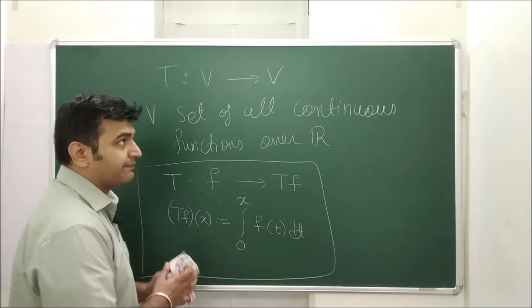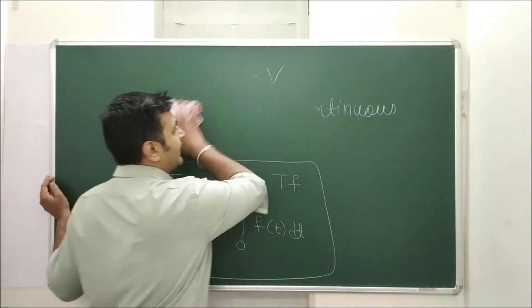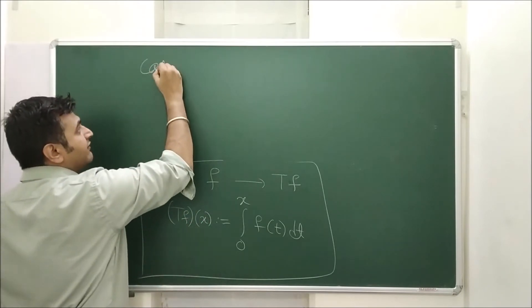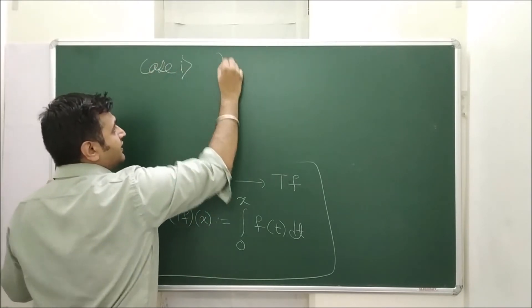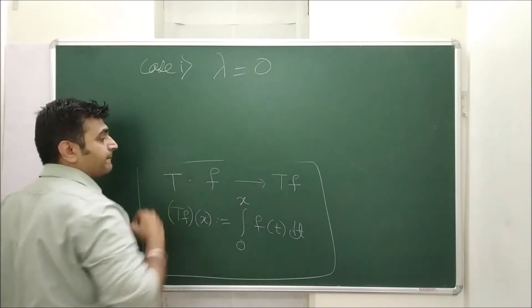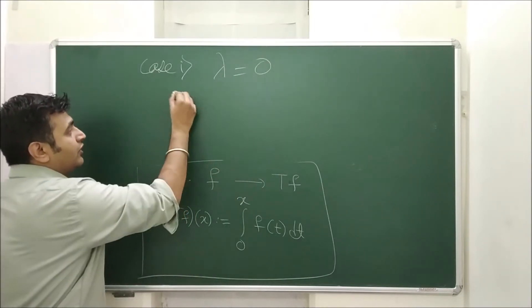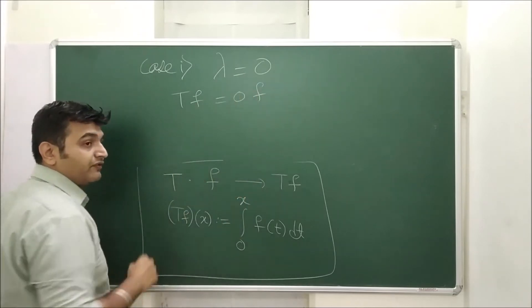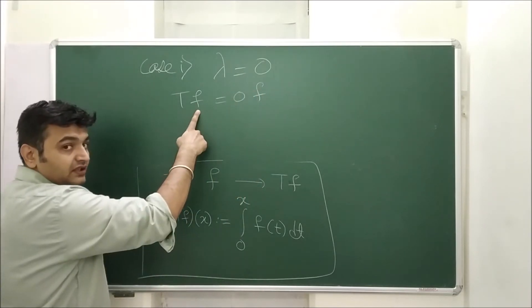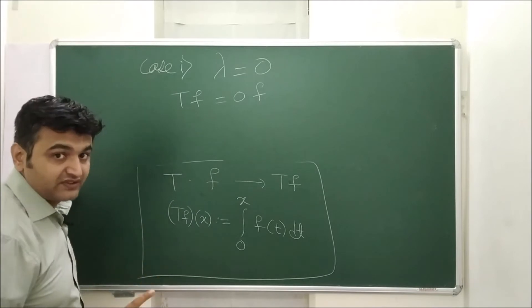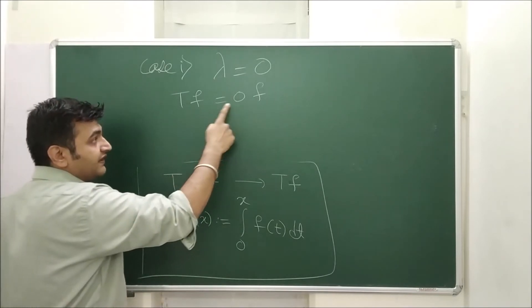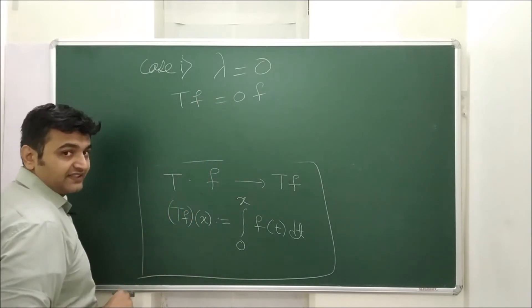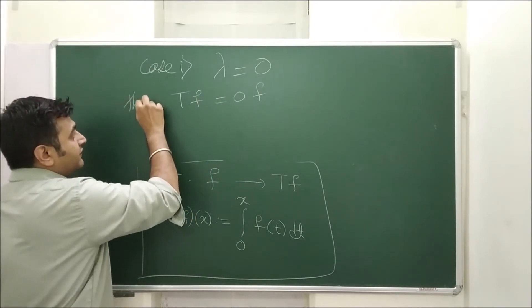So let's go step by step. First I will prove that lambda equal to 0 can't be the eigenvalue. So I will be playing with two cases. Case 1, suppose your lambda is 0 that means what your tf is equal to 0f by definition of eigenvalue and eigenvector where f is an eigenvector. Eigenvectors are always non-zero. So this is a non-zero function f and 0 is the eigenvalue. So suppose if lambda equal to 0 is an eigenvalue then we have this equation.